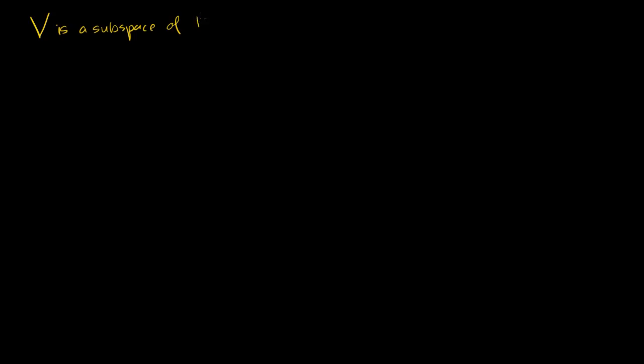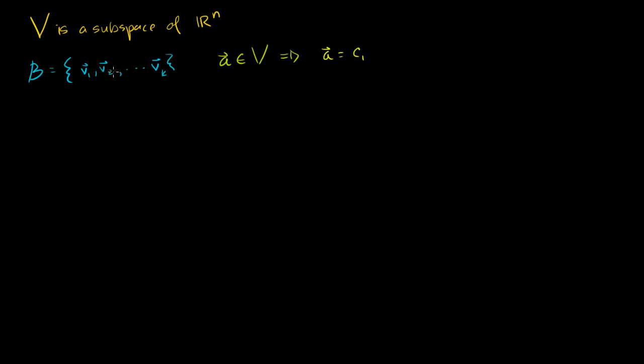Let's say V is a subspace of Rn, and the set B is a basis for V. So it's got vectors v1, v2, all the way to vk — so we have k vectors, making V a k-dimensional subspace. That means if I have some vector A that is a member of my subspace, I can represent A as a linear combination: some constant times v1, plus some other constant times v2, all the way to a k-th constant times the k-th basis vector.